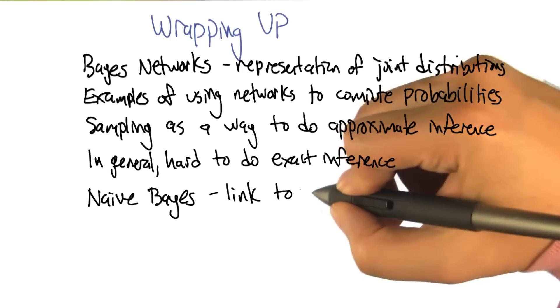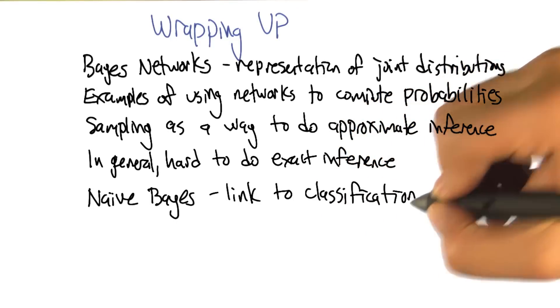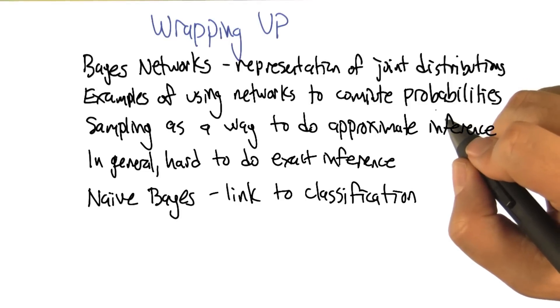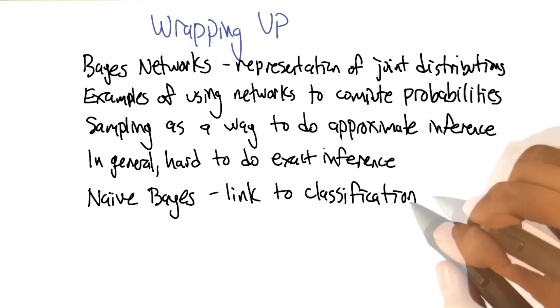Right. And this was actually helping us make a link between all this Bayesian stuff, that Bayesian rabbit hole that we went down, and classification, which is the core machine learning topic that we've been spending a lot of time on.